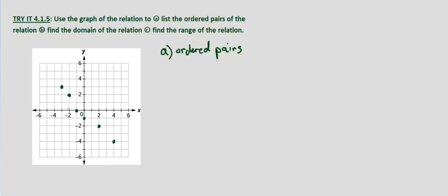Our first point at the top left is negative 3, 3. The second point is negative 2, 2. This third point is negative 1, 0. And then 0, negative 1. And then 2, negative 2. And finally 4, negative 4.